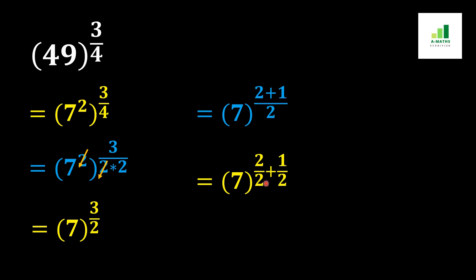Now this 2 and this 2 will cancel out and it will become 1, plus 1 over 2 in the power will remain the same.